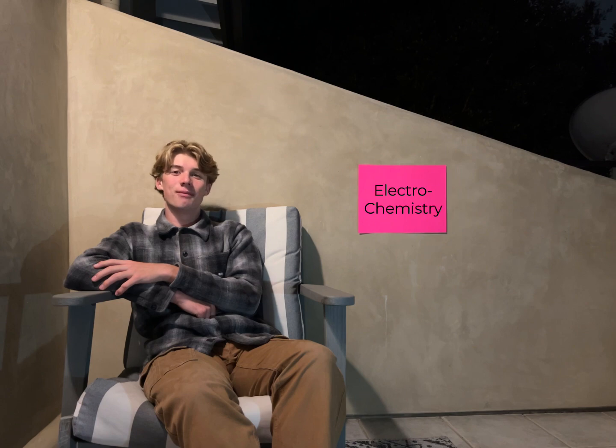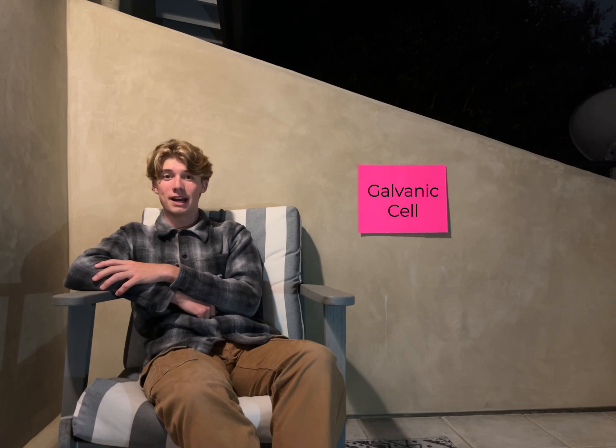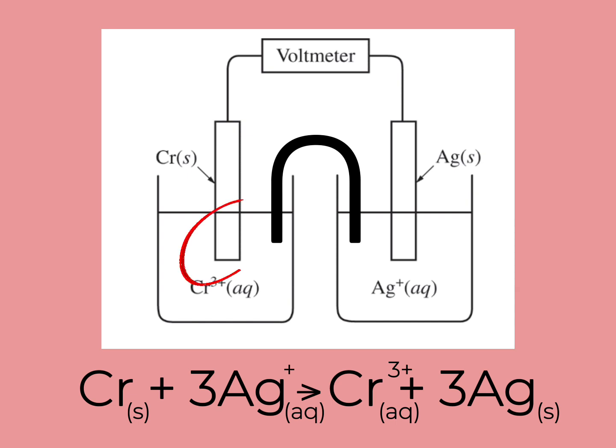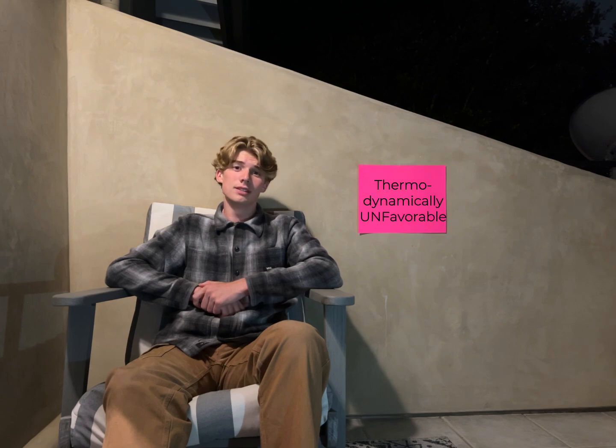Finally, there's electrochemistry, which is basically the harnessing of redox reactions to make electricity. It works through separated redox reactions using the transfer of electrons to make energy. The most common setup is the galvanic cell — a thermodynamically favorable battery. At the anode, loss of electrons and mass occurs through oxidation; at the cathode, gain of electrons and mass occurs through reduction. You can remember these because oxidation and anode start with vowels, while reduction and cathode start with consonants. To find overall voltage, flip whatever voltage makes the addition of both positive — the one you flip is the anode. When the E value is positive, the reaction is favorable; if negative, it's unfavorable, as shown by the relationship ΔG = −nFE.